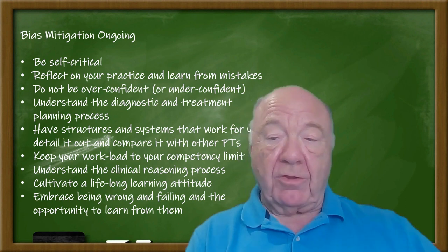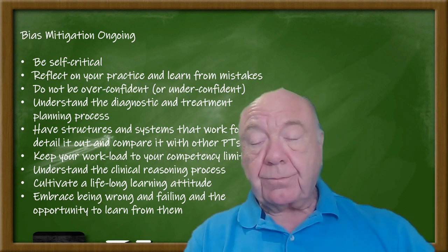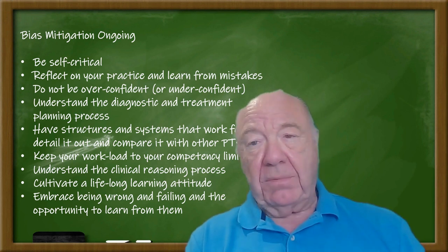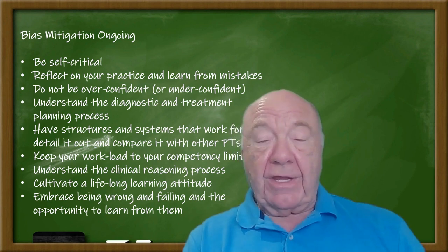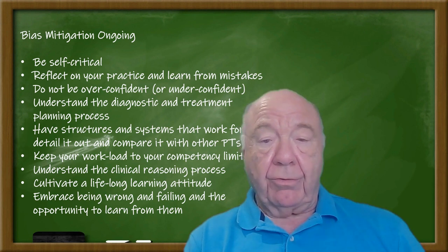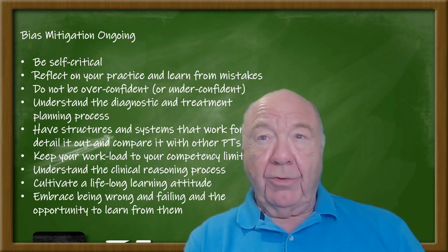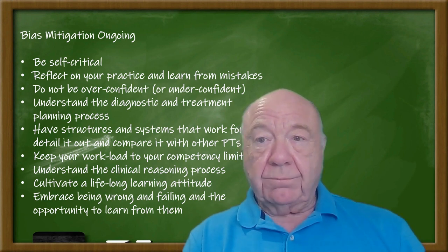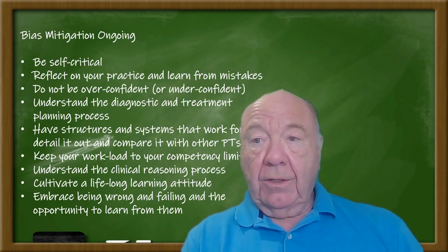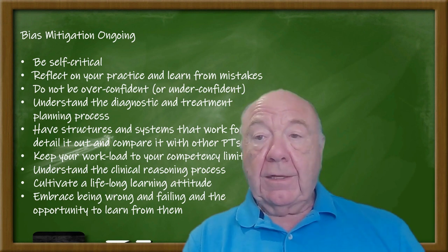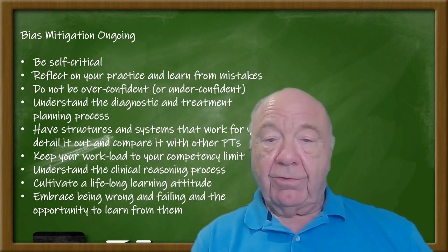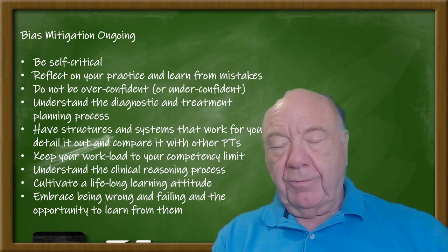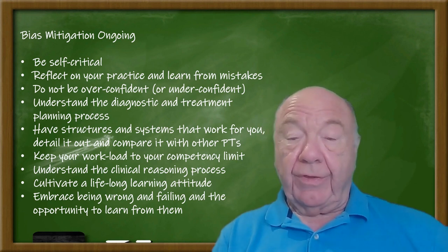Don't be overconfident — nobody is as good as they think they are. As you move towards proficiency, mastery, and expertise, your confidence actually starts to drop — this is the Dunning-Kruger effect. As you learn more, you become a little less confident, and that's a good thing. You all know practitioners — surgeons in particular — who are arrogant and good but can't be wrong. That's not great practice; it'll be fine until something requires them to learn something new, and then there's trouble.